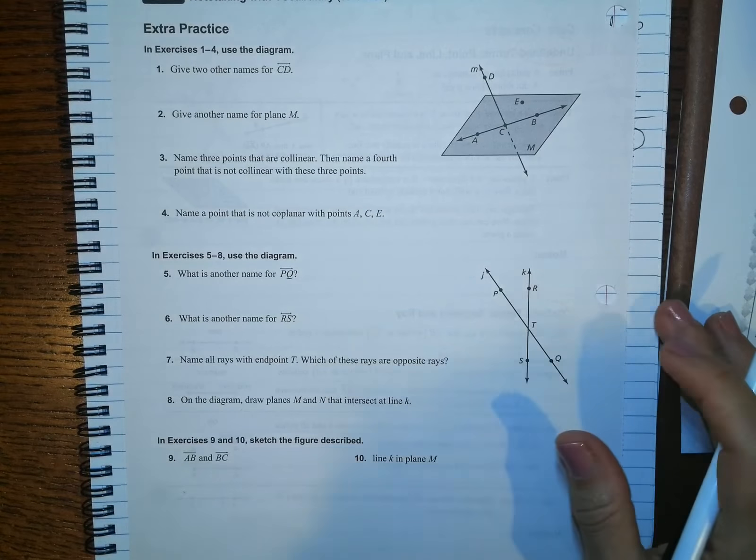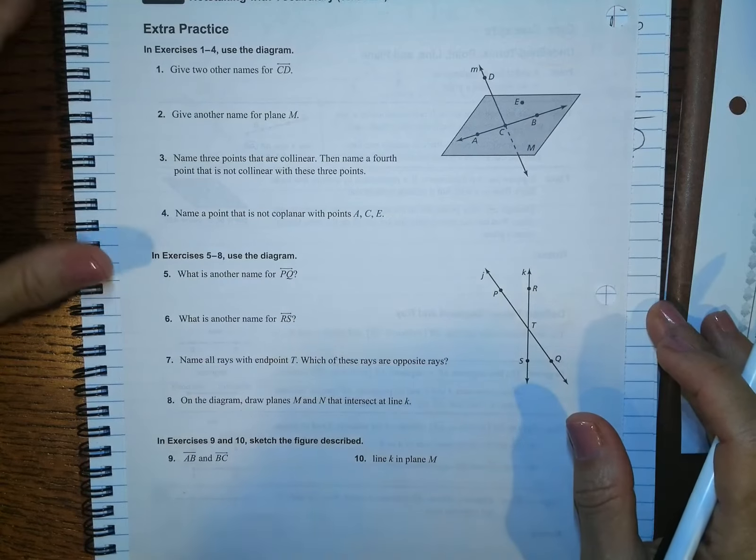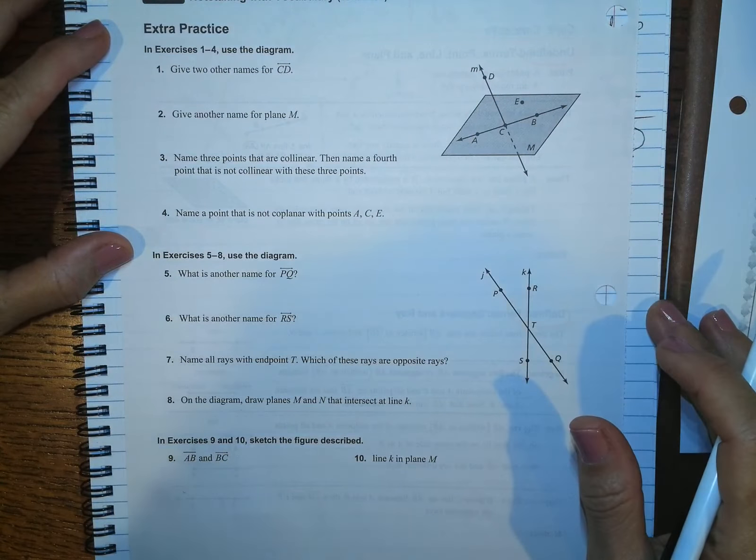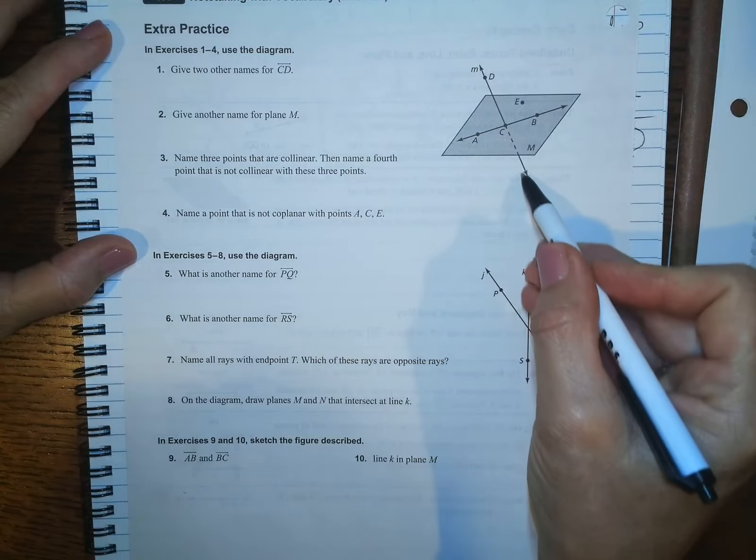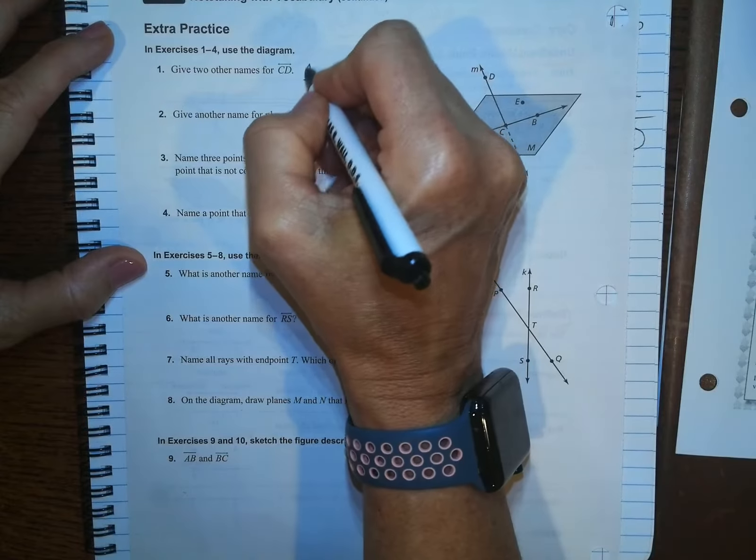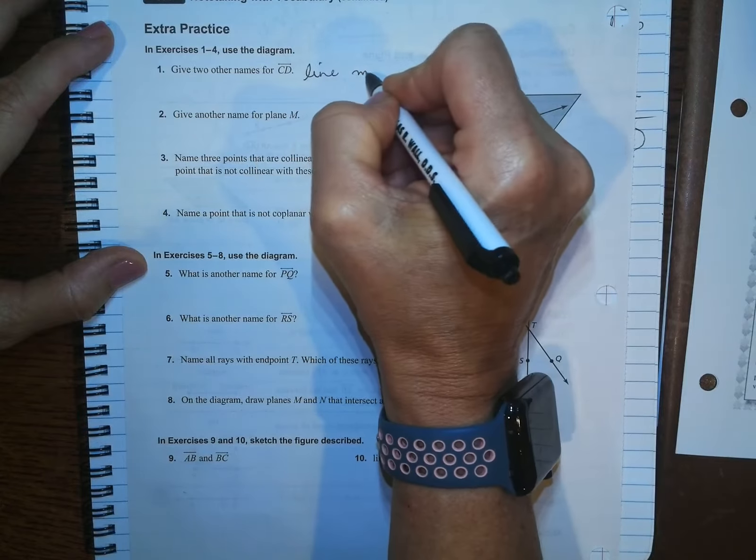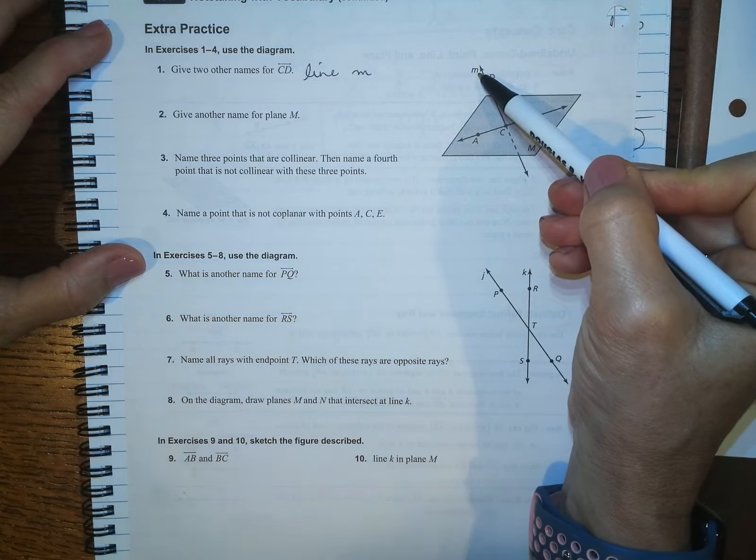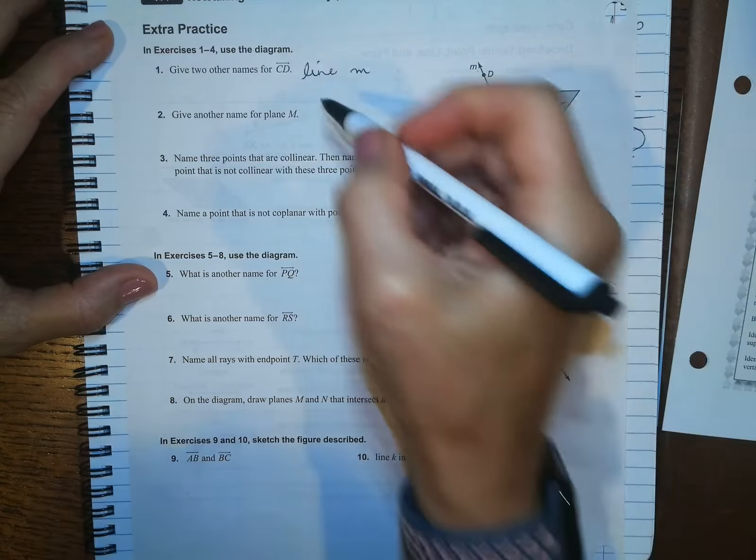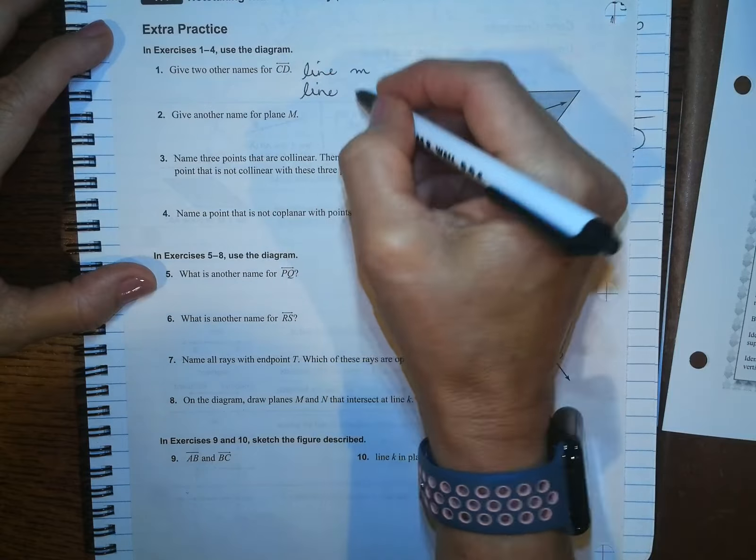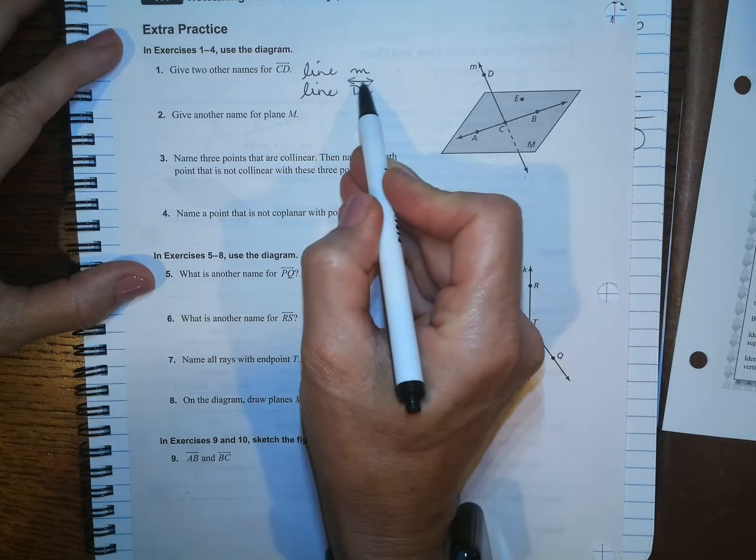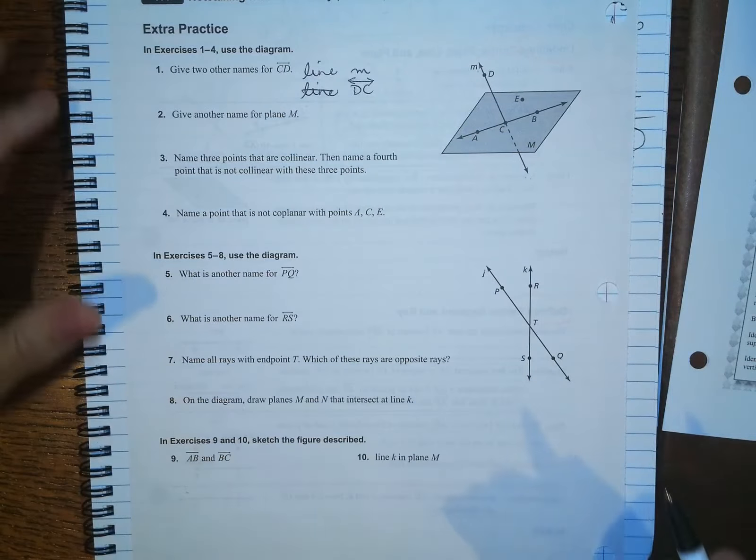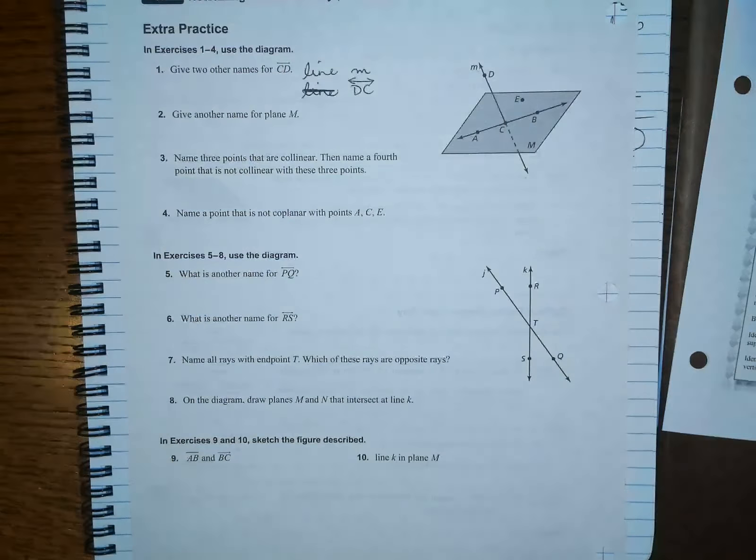Okay. So when it says, give two other names for line CD. Okay. So line CD is here. And you can say that it is line M because this little letter is right here, line M. Or you could also say line DC, which if you write this symbol, you don't really have to write this symbol. You don't have to write the word line.